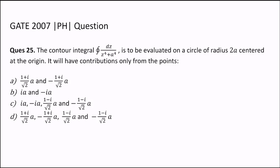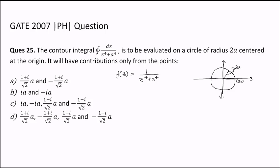Basically what they're asking is: we have a complex function f(z) which is 1 upon z to the power 4 plus a to the power 4, and we need to evaluate the closed contour integral of dz upon z to the power 4 plus a to the power 4 on a circle of radius 2a centered at the origin.